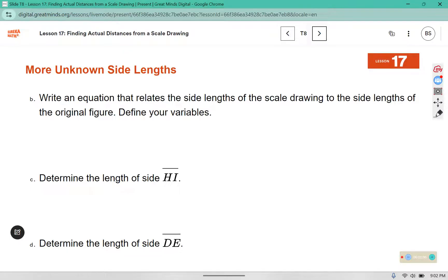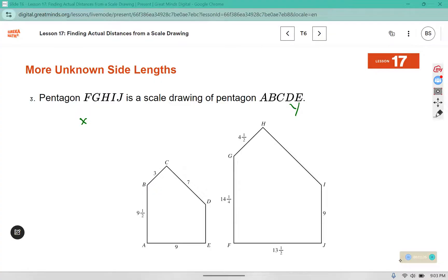Part b says write an equation that relates the side lengths of the scale drawing to the side lengths of the original figure and define your variables. The new or the scale drawing will be y and the original will be x. To figure out the scale factor, I'm going to use the new side length divided by a corresponding original side length. So I'm going to find k by doing 4 and a half divided by 3.